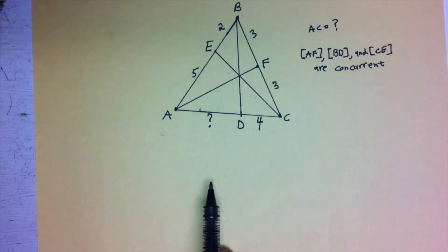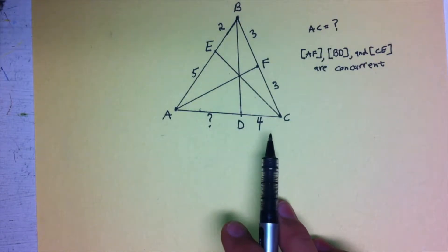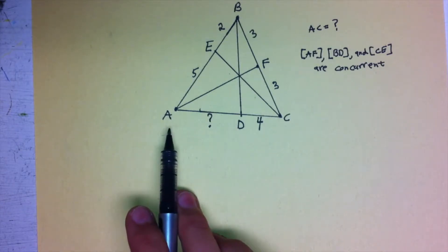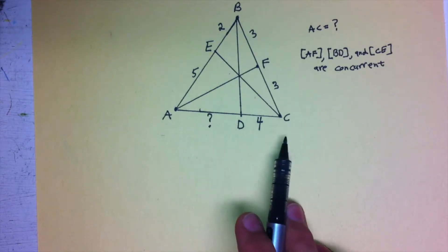The question we're being asked is: what is the length of line AC? What we're going to do is use Ceva's Theorem to solve for the length of AD and then add 4 to get the total length of AC.